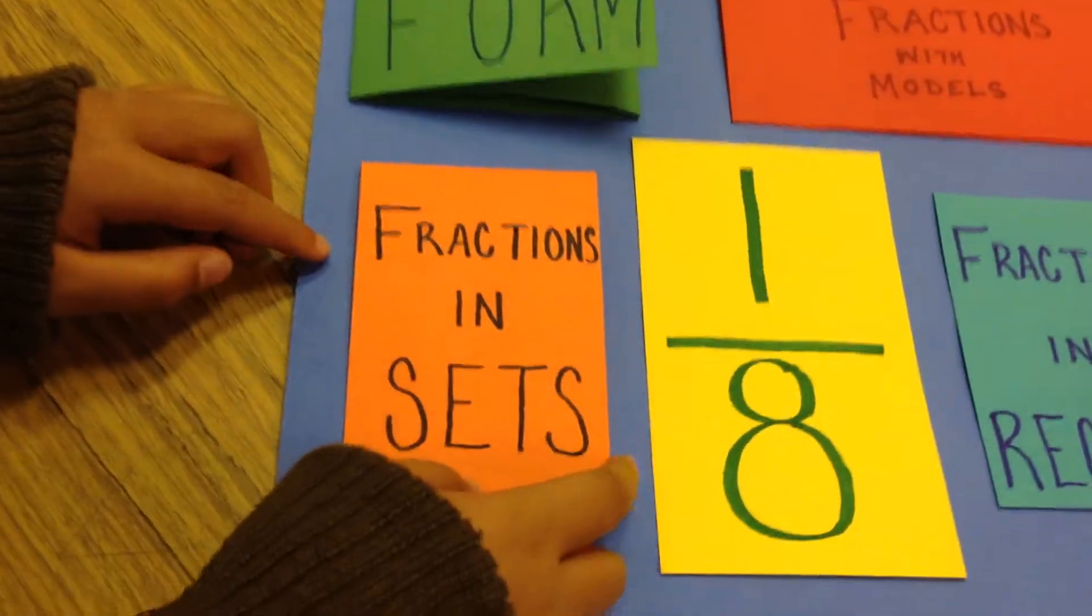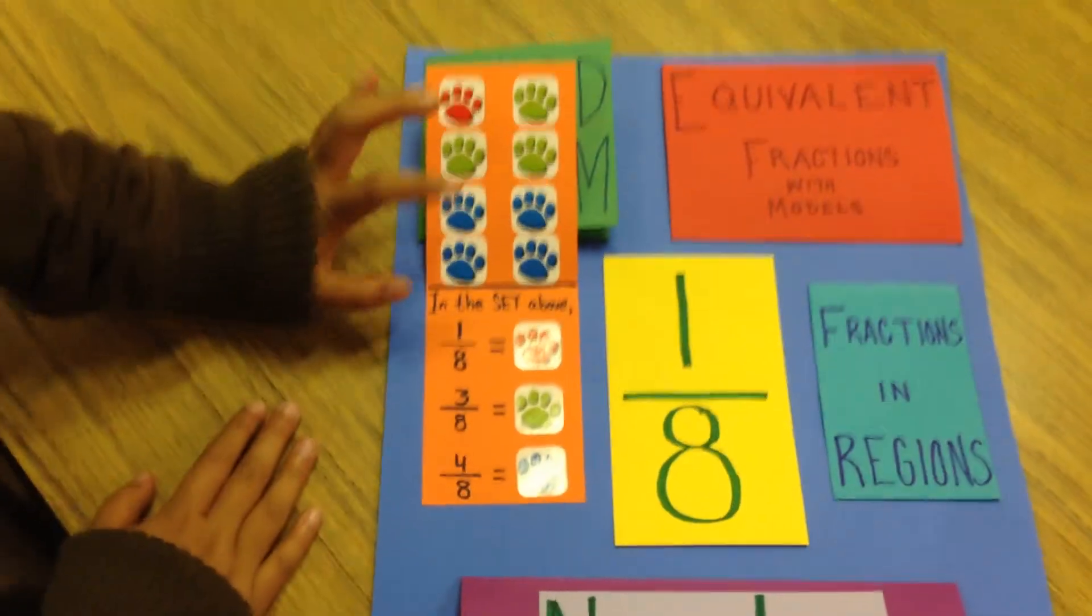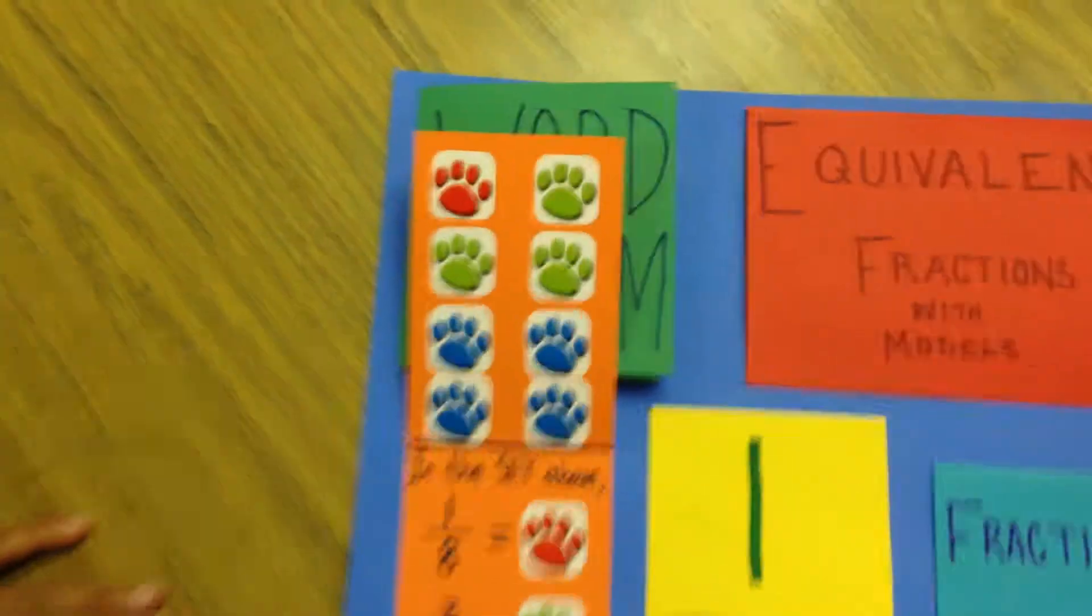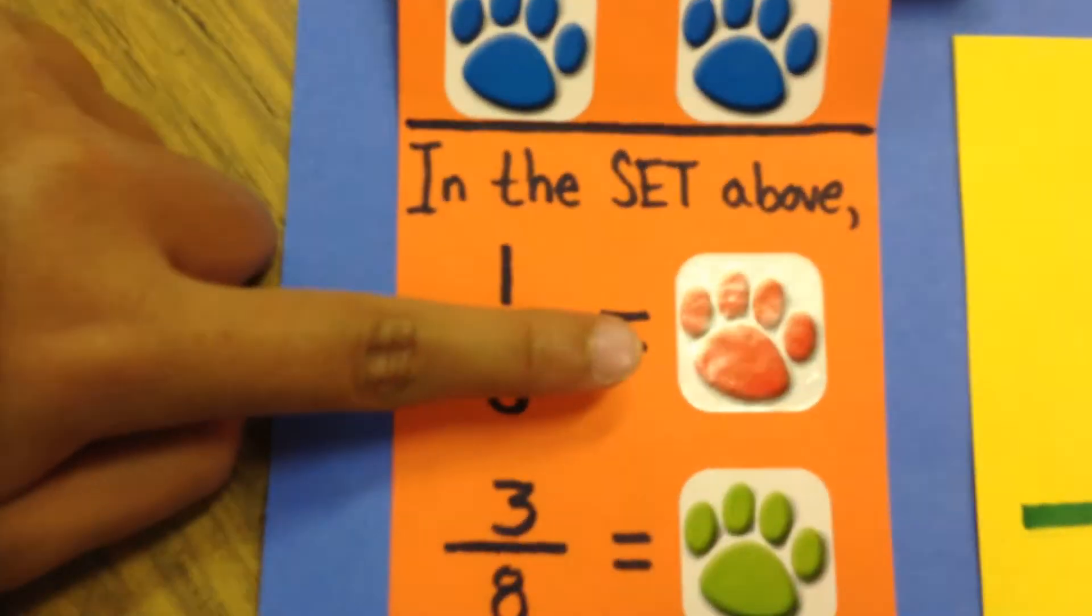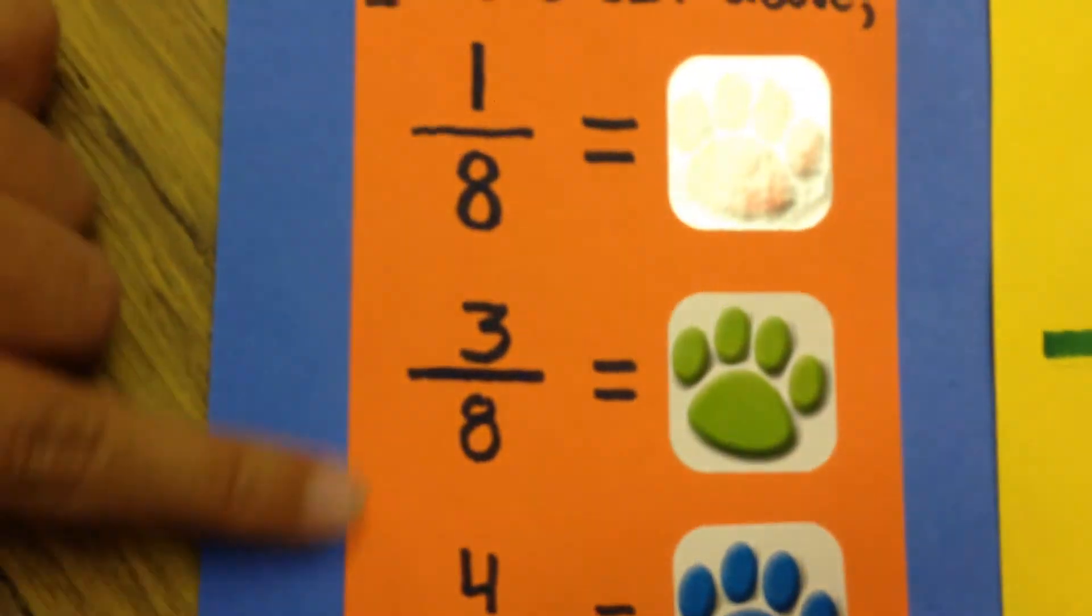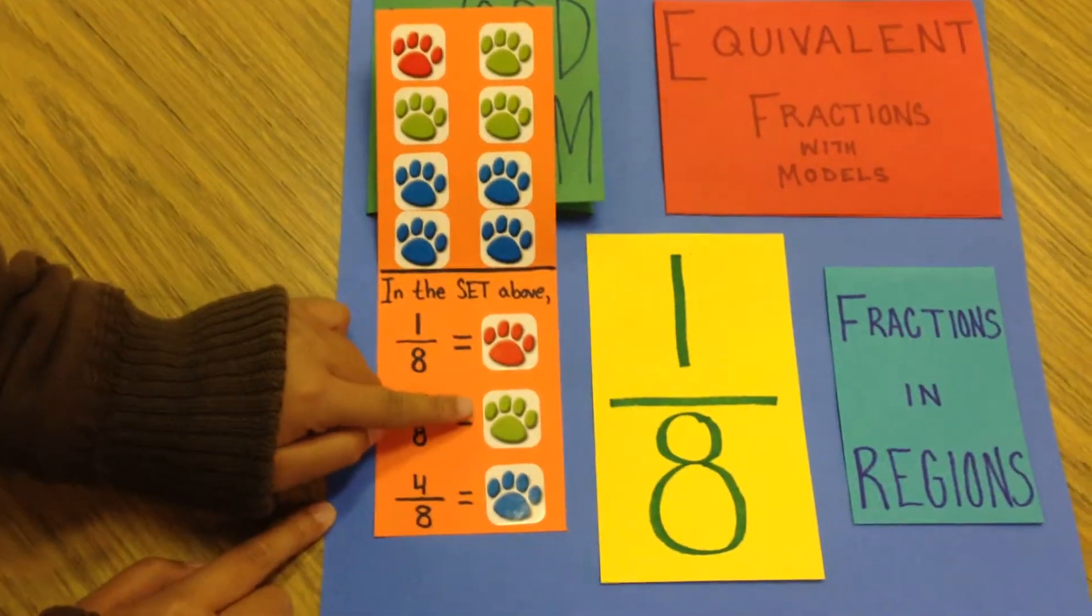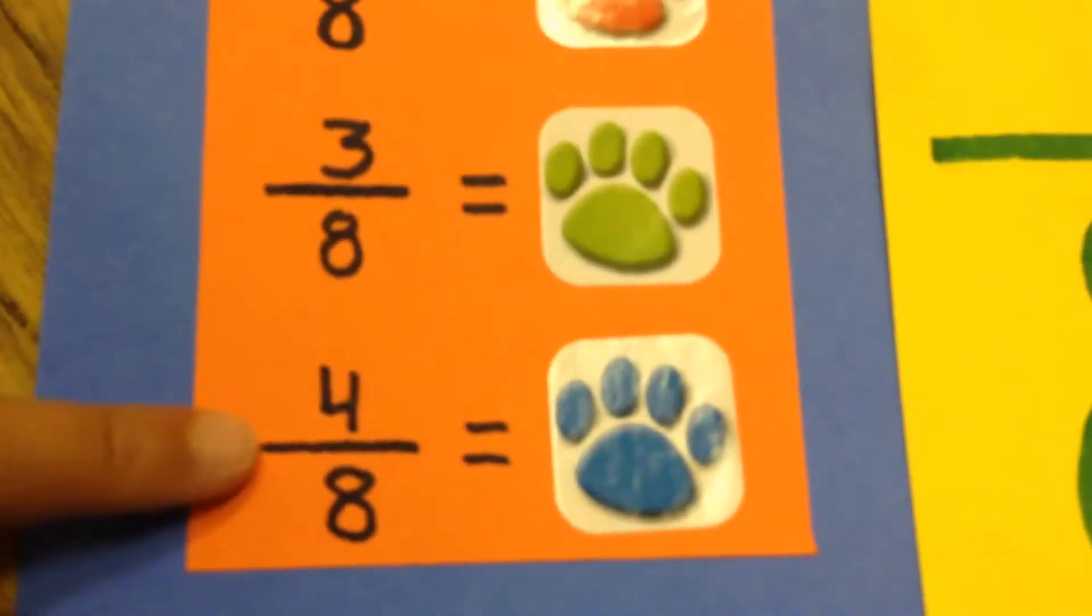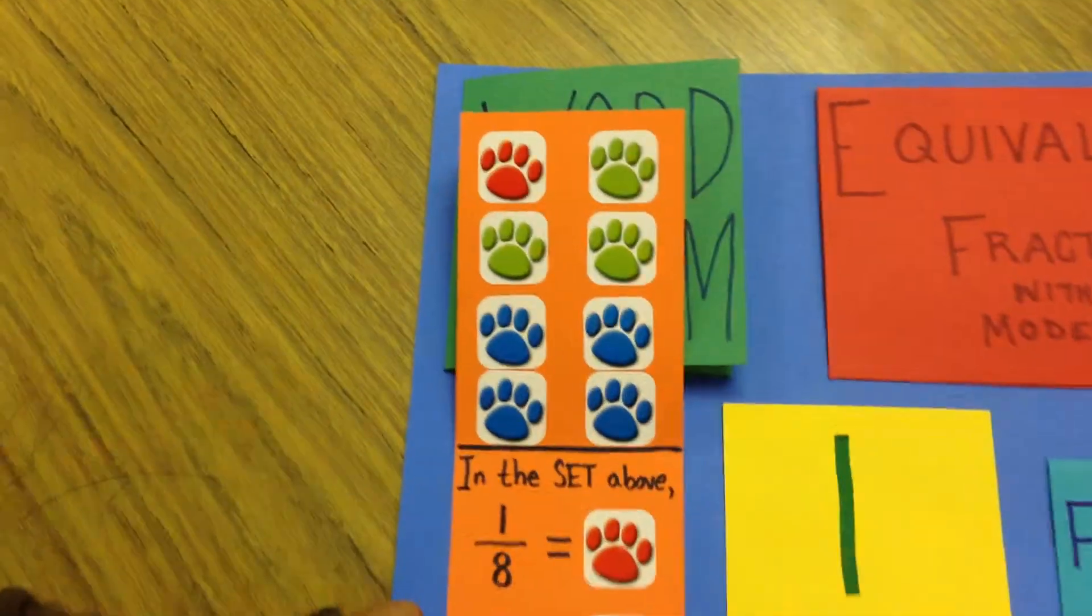The fraction in sets are that we have a group of stickers of puppy paws. There's one eighth of red sticker paws, three eighths of green sticker paws, and four eighths of blue puppy sticker paws.